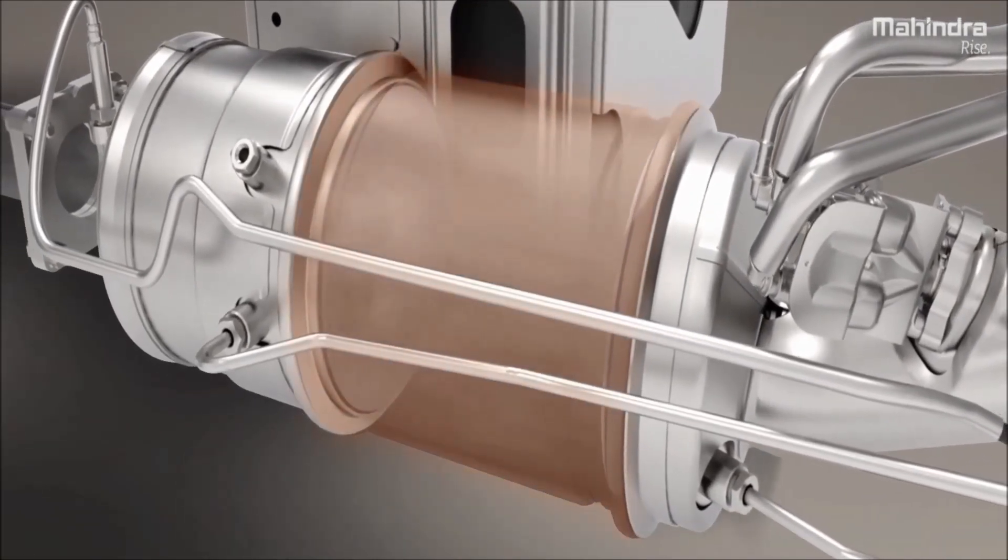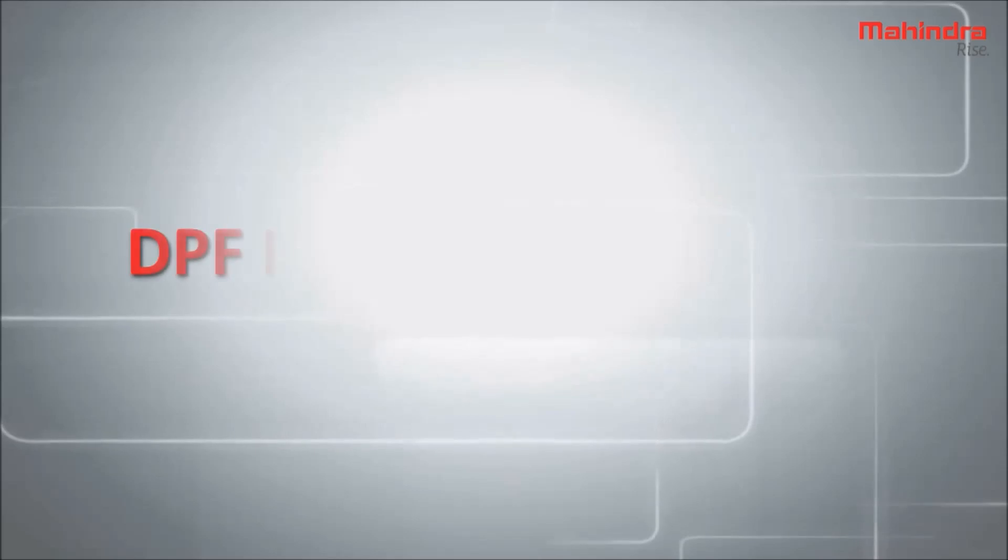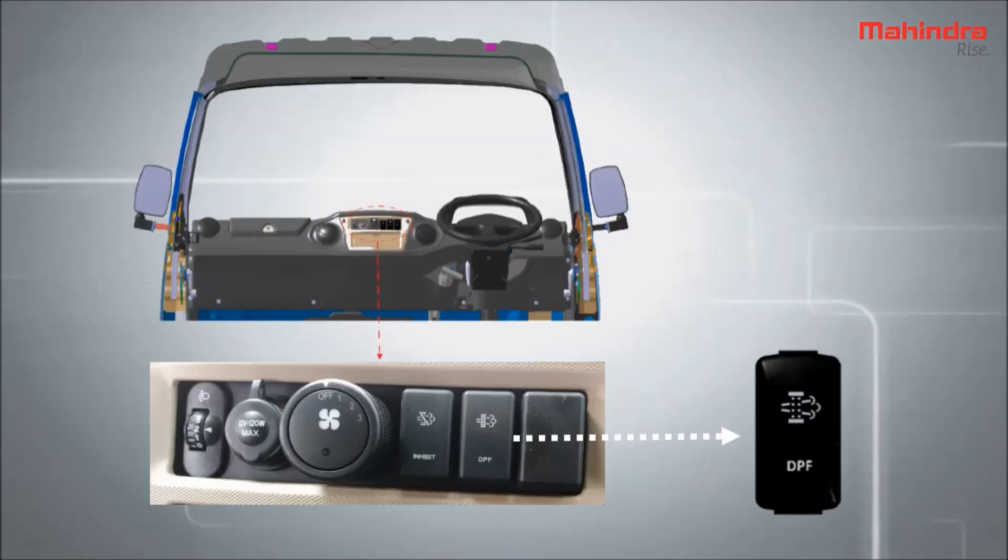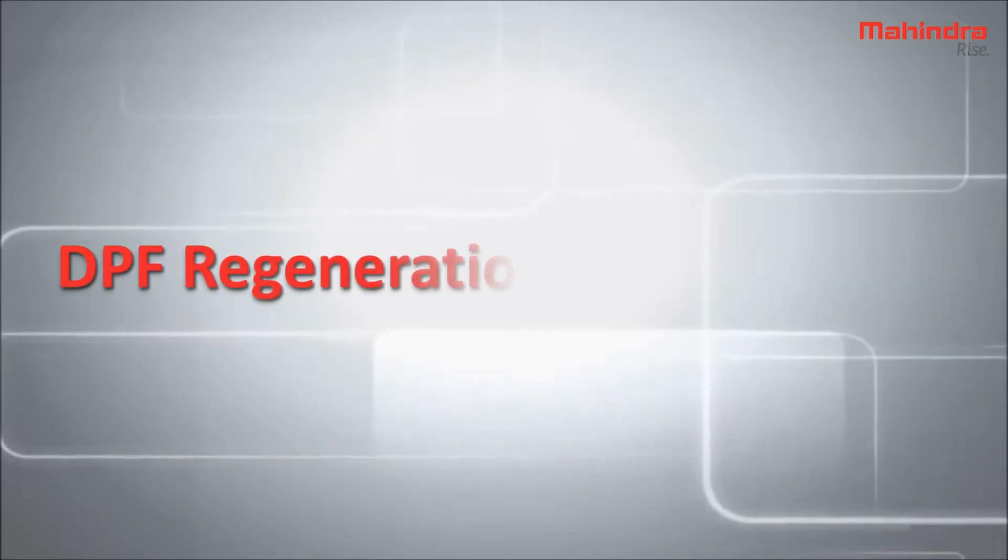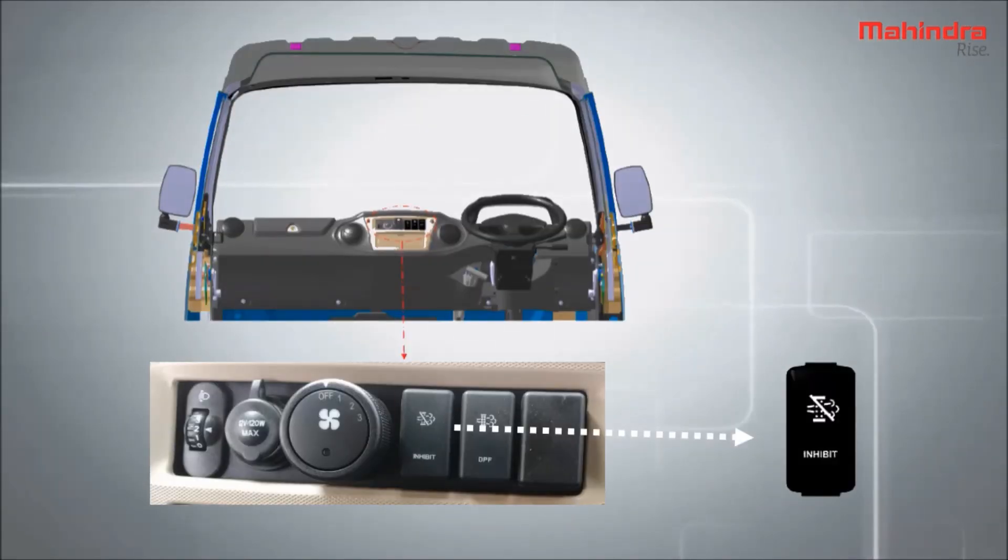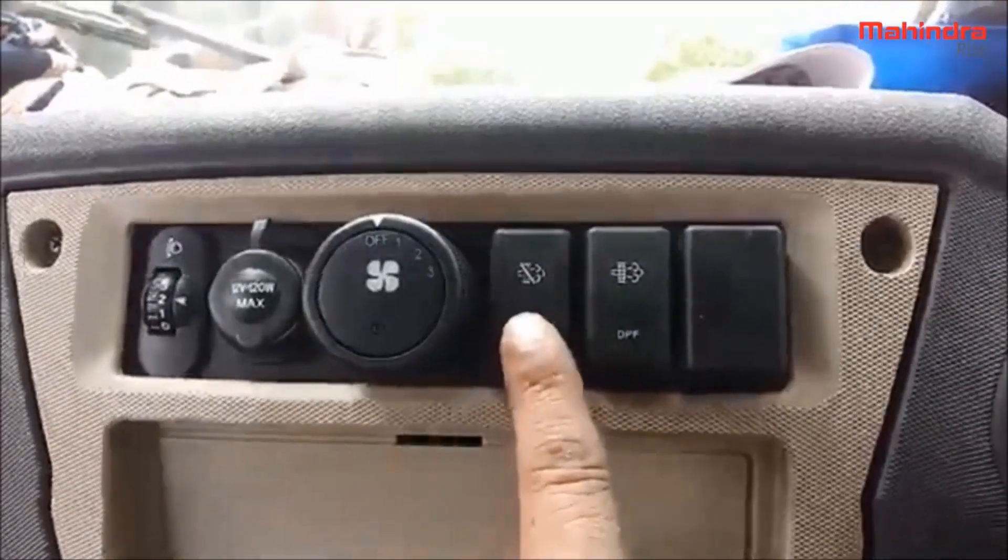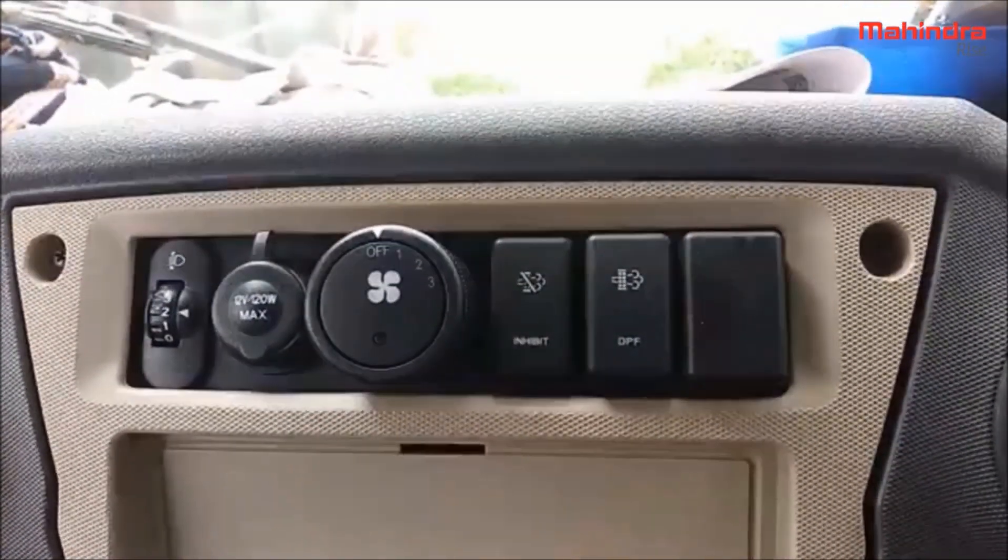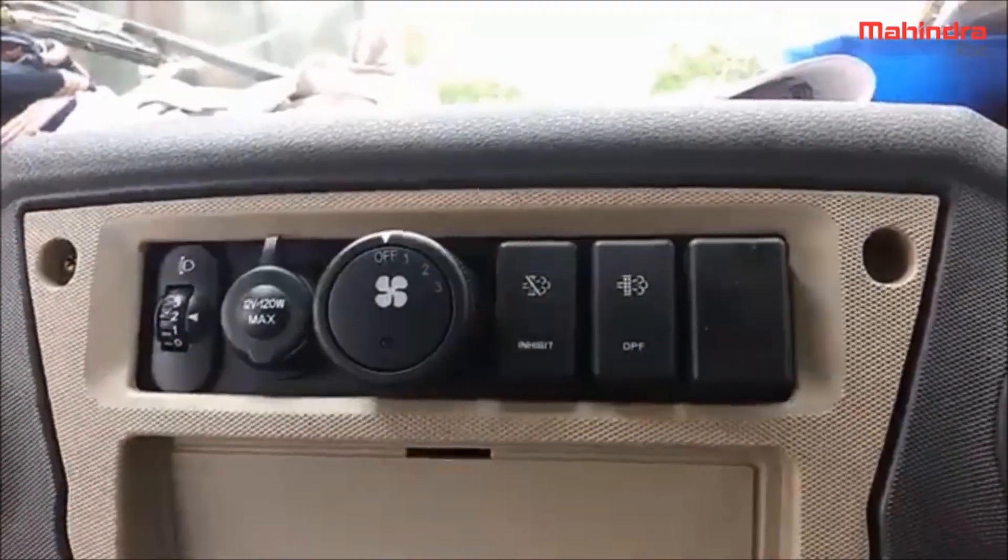DPF regeneration switches fit on the dashboard of the vehicle. There is another switch used in this process which is called DPF regeneration inhibit switch, and this is fitted on the dashboard. This is an on-off type switch. Under normal conditions it should be in off mode. The inhibit switch is pressed inwards in the on position, while in off it appears level with other switches.